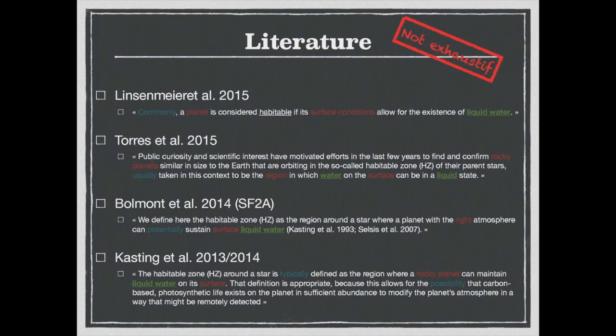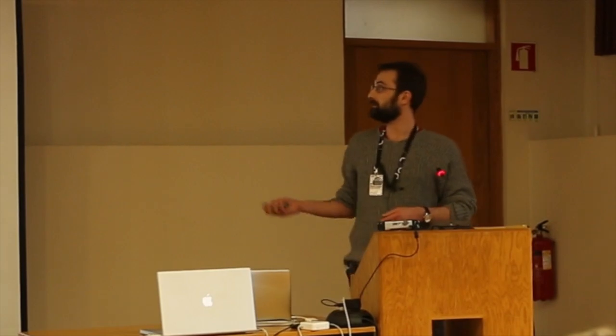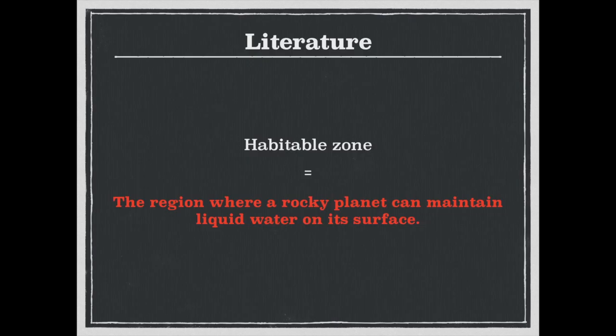First, let's give the definition of the habitable zone. So this is a list of definitions of the habitable zones that I get from the literature, from my favorite papers. I will not read them, but trust me, and fortunately they are quite consistent to each other. The definition of the habitable zone is the region where a rocky planet can maintain liquid water on its surface.